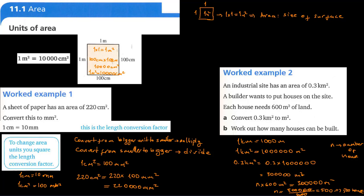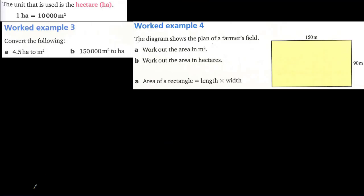The unit used in the previous question is also called a hectare. One hectare equals 10,000 meters square. It is smaller than one kilometer square, because one kilometer square equals one million meters square.